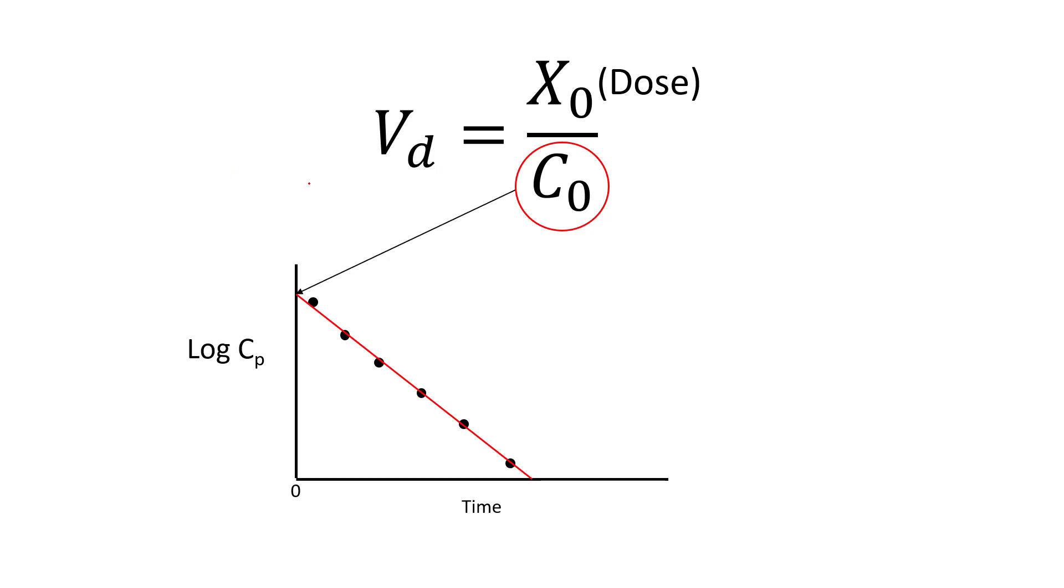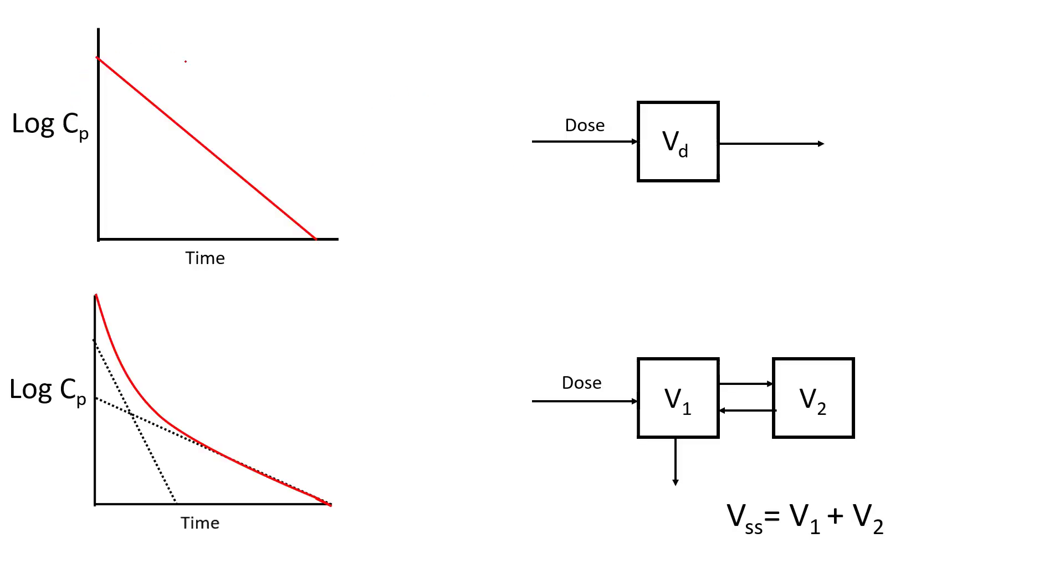So when we give a drug that distributes very fast, and we just have this elimination, single slope elimination, it can be described by a one compartment model. Now, I'm getting ahead of myself, I don't want to really talk about modeling just yet, but you may run across something that has more than one volume, and you may say, well, what's the deal there?